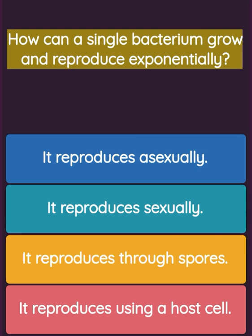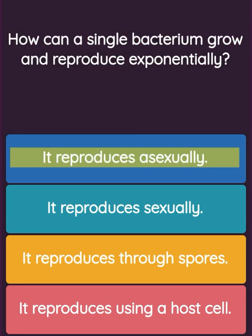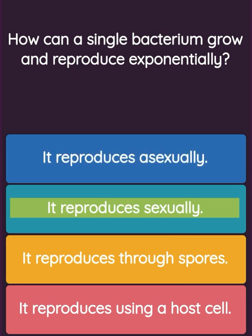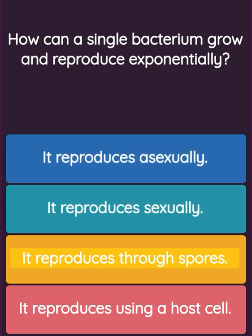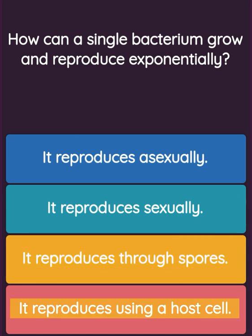Question: How can a single bacterium grow and reproduce exponentially? Option one: it reproduces asexually. Option two: it reproduces sexually. Option three: it reproduces through spores. Option four: it reproduces using a host cell.